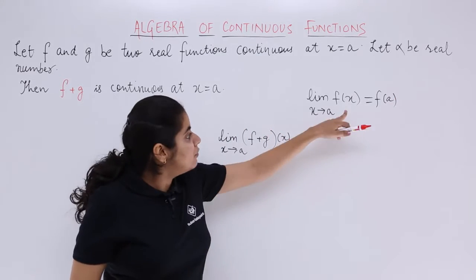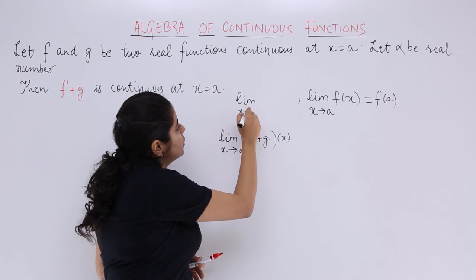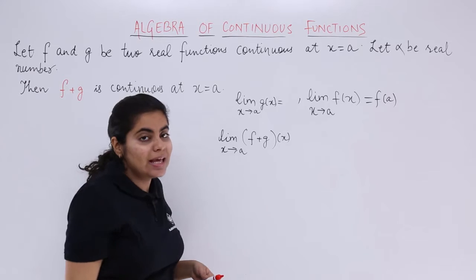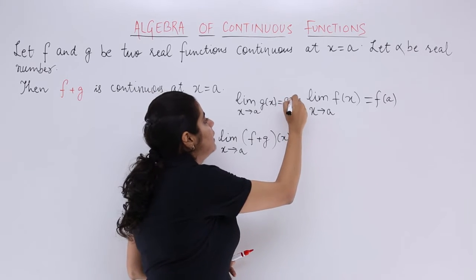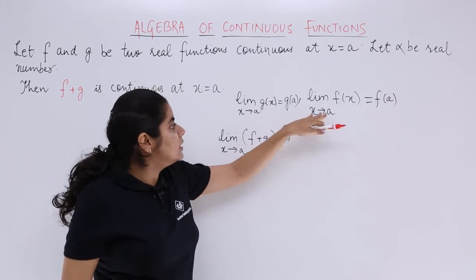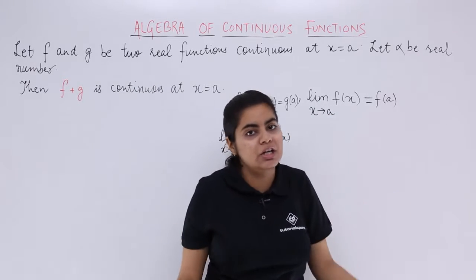Similarly, when we talk the same thing about gx because g is also a continuous function at x equals a. So for gx, the same story should be there that its value and the limit should have the same answers. That means these two things should exist because of the fact that we have continuous functions.